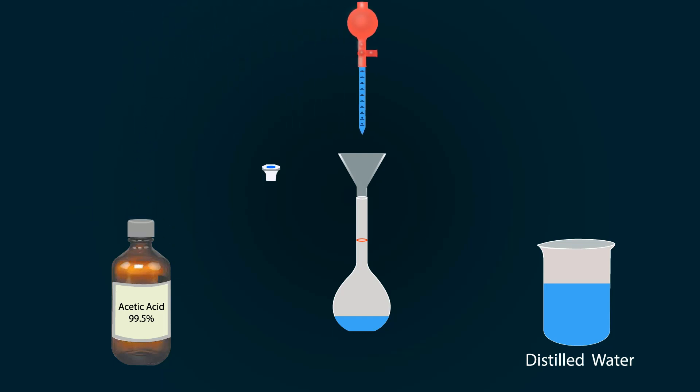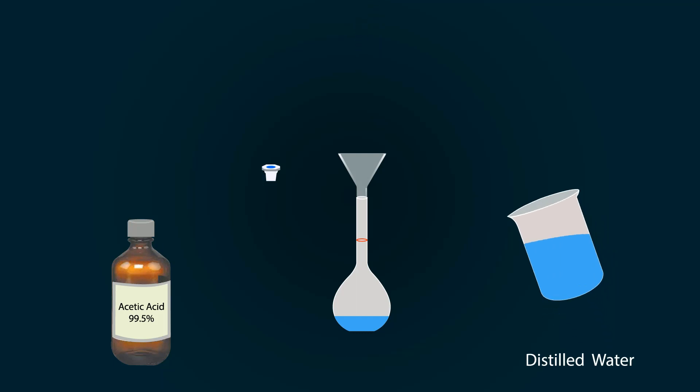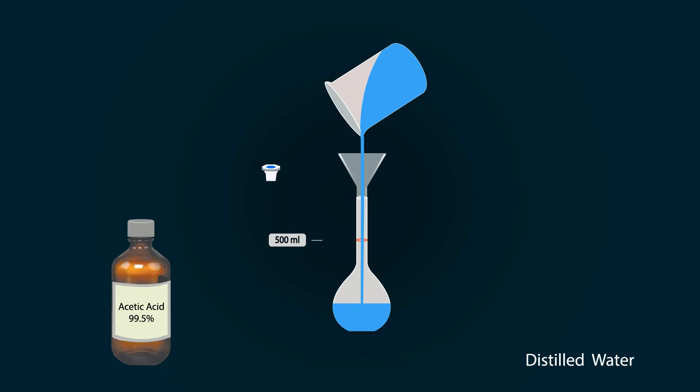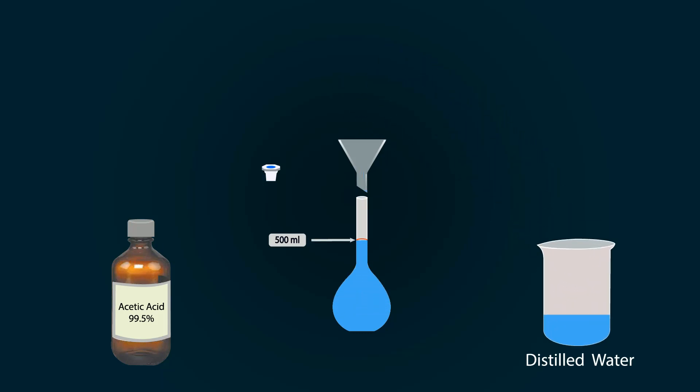and put into the volumetric flask drop wise so you can get precise measurement. Now please add more distilled water to reach it up to the mark which is 500 milliliters. You have successfully prepared one molar solution of acetic acid. You can store it in any bottle you want. Thank you.